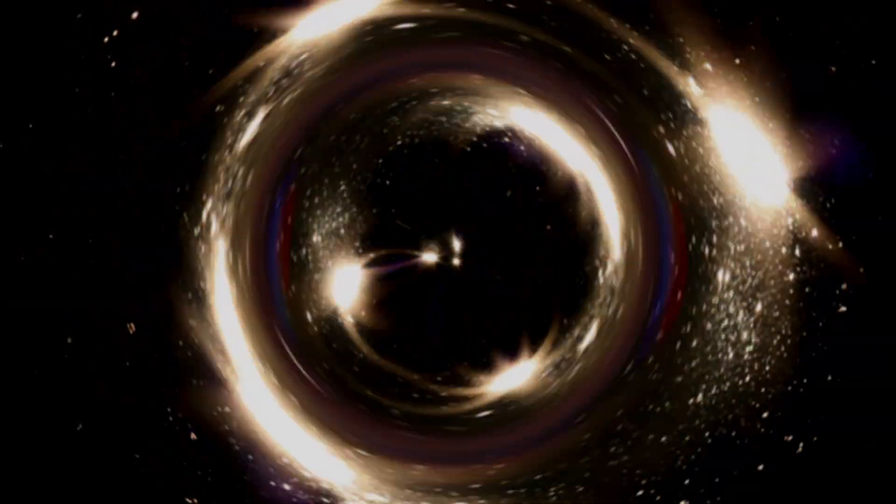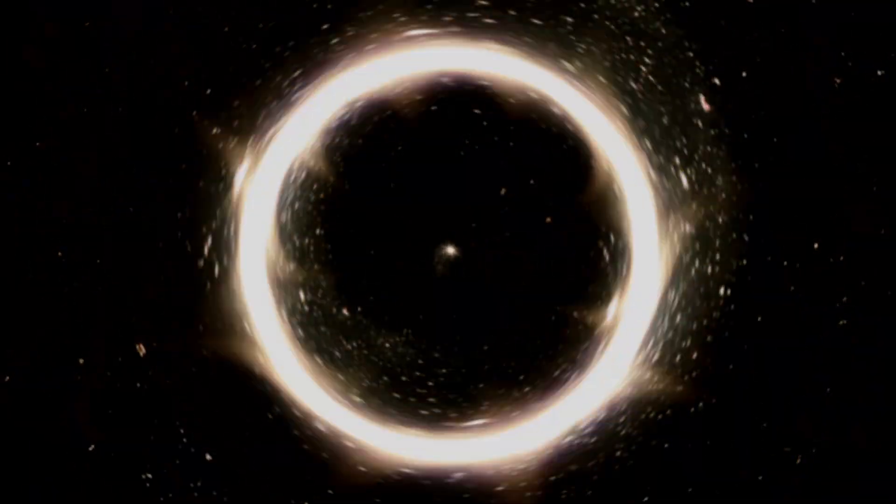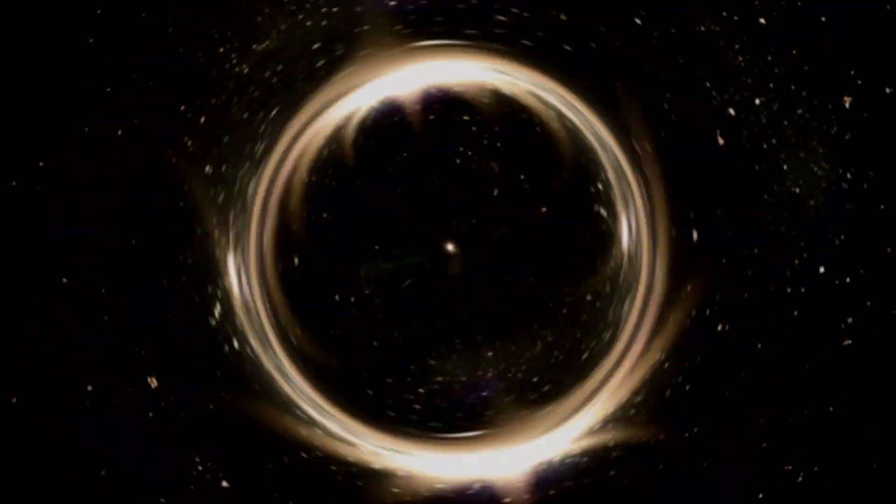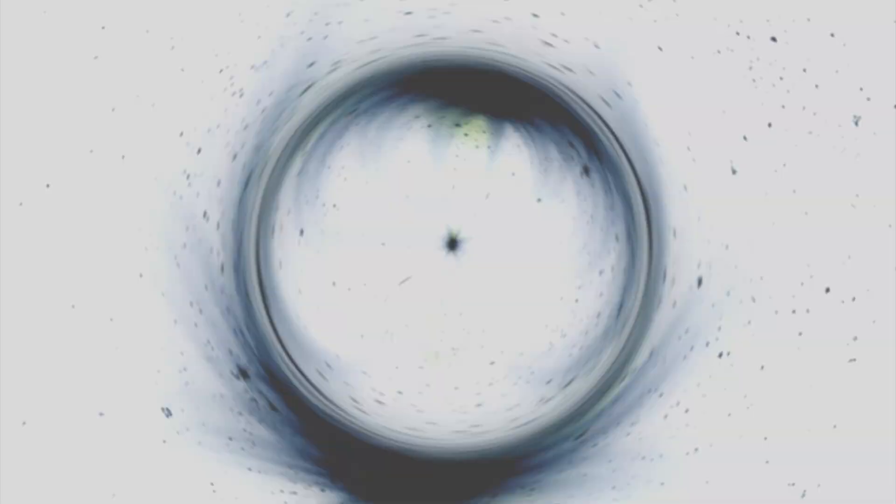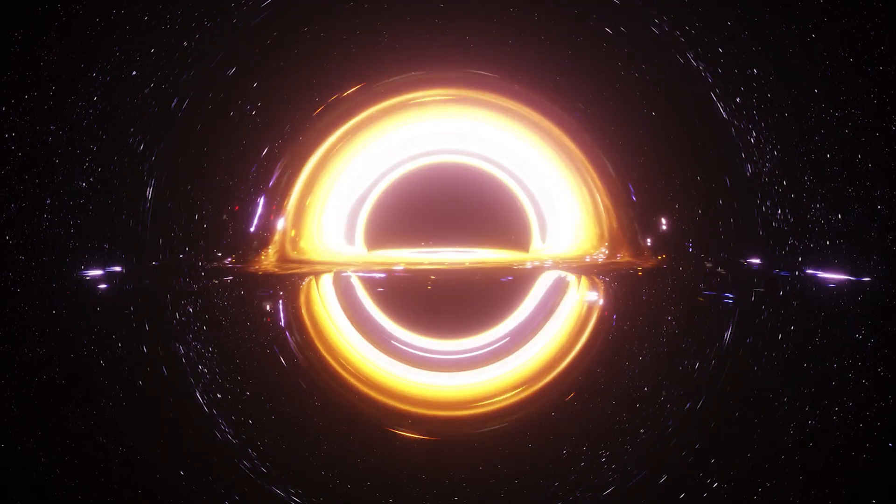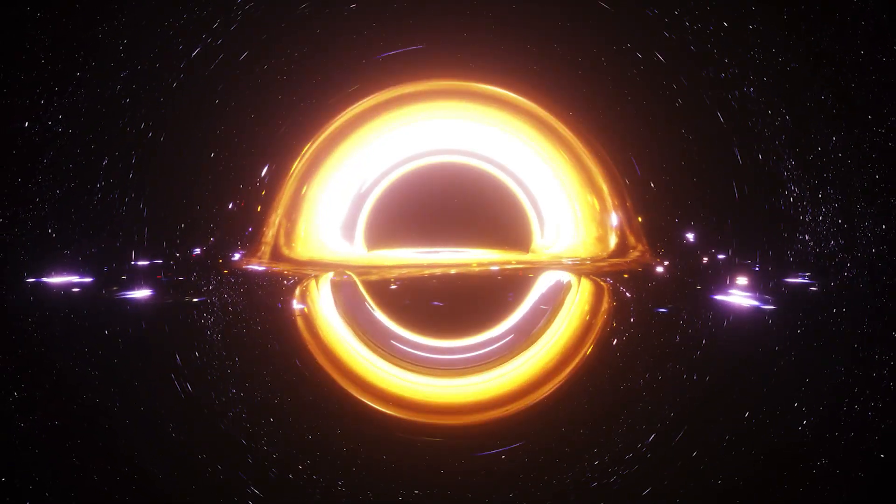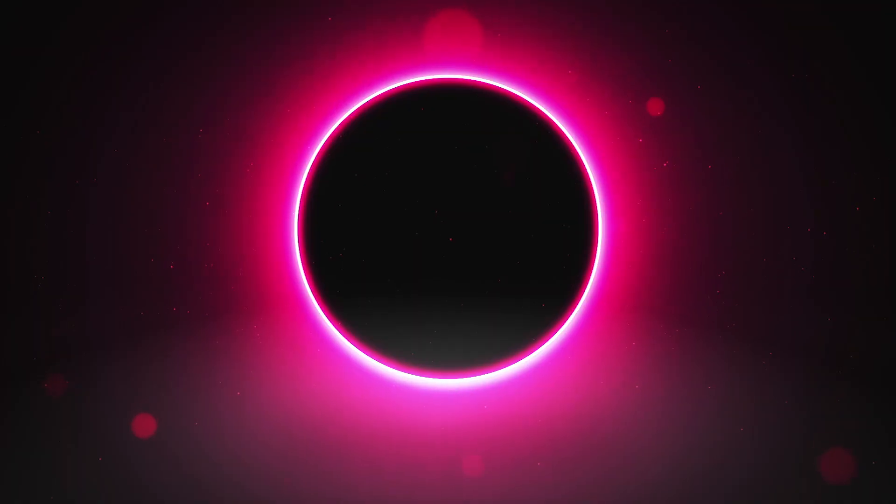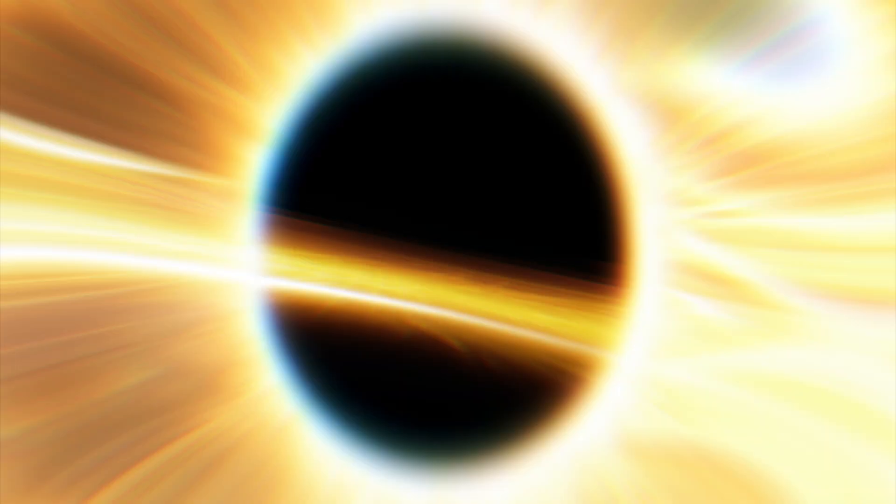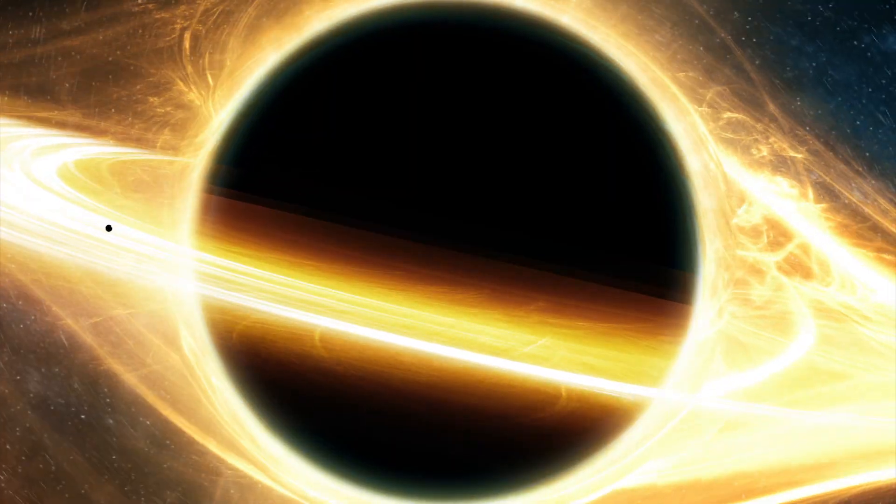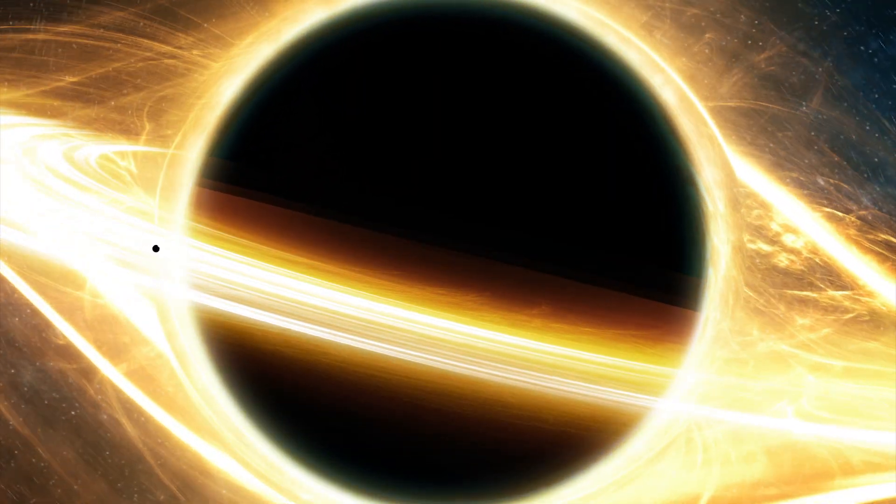In a particular mathematical case, the singularity in a spinning black hole becomes a ring, not a point. However, in reality, that mathematical circumstance will not exist. Others argue that the singularity is a whole surface within the event horizon. We don't know that. It is possible that singularities don't exist in actual black holes.